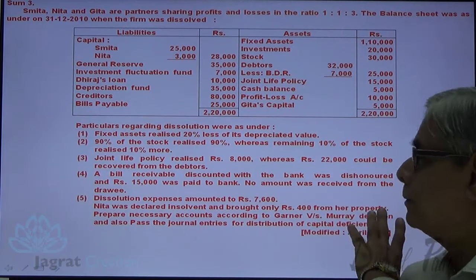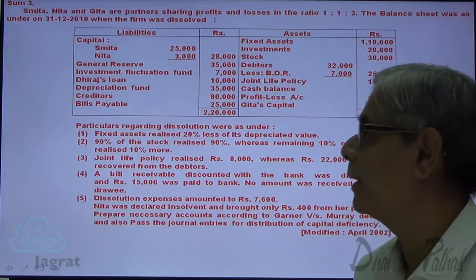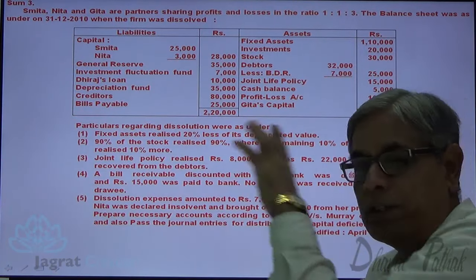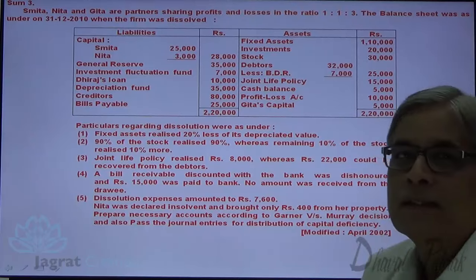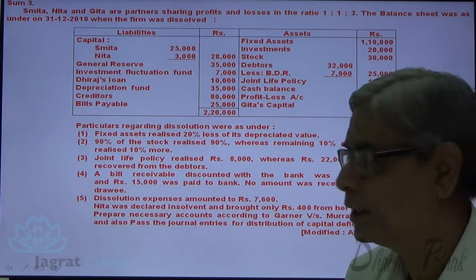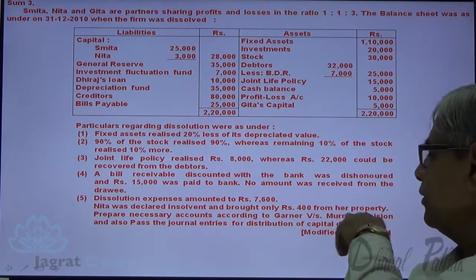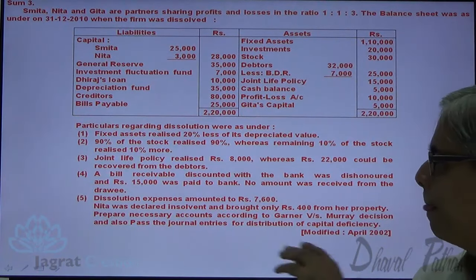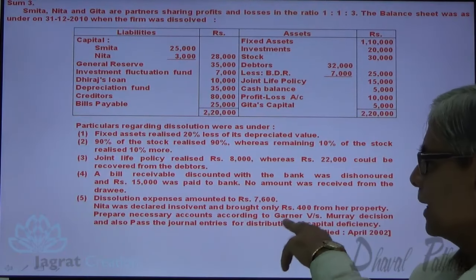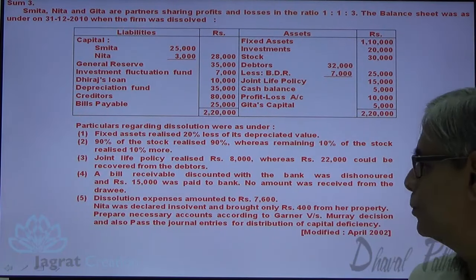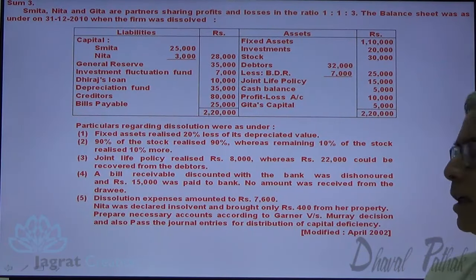Dissolution expenses amounted to 7,600. Nita was declared insolvent. Notice that Nita is having a credit balance of capital account, yet she is insolvent, while Gita has a debit balance but she is not insolvent — she is solvent. Nita brought only 400 from her property. Prepare necessary accounts according to Garner versus Moore's decision, also pass the general entry for distribution of capital deficiency.